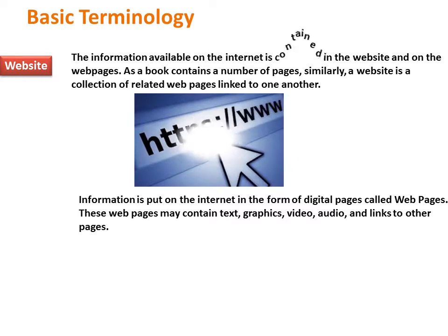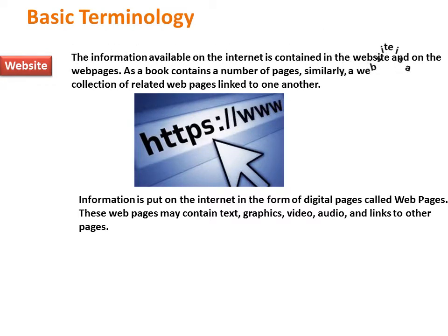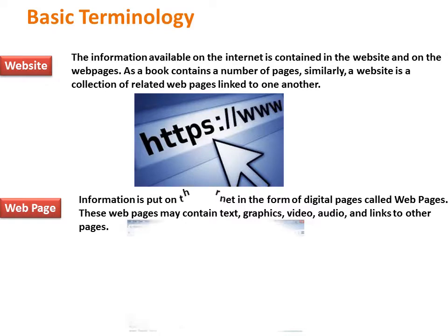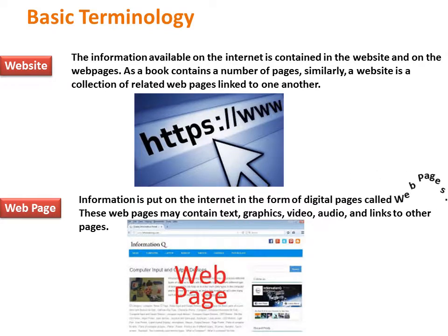Basic Terminology. Website: The information available on the internet is contained in websites and on web pages. As a book contains a number of pages, similarly a website is a collection of related web pages linked to one another. Web page: Information is put on the internet in the form of digital pages called web pages. These web pages may contain text, graphics, video, audio, and links to other pages.